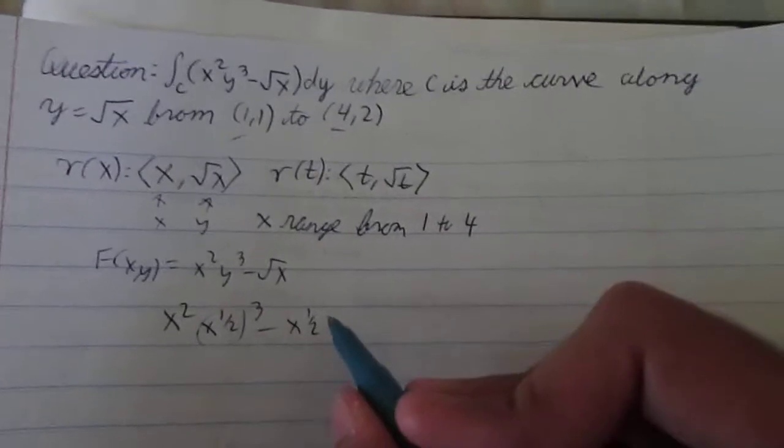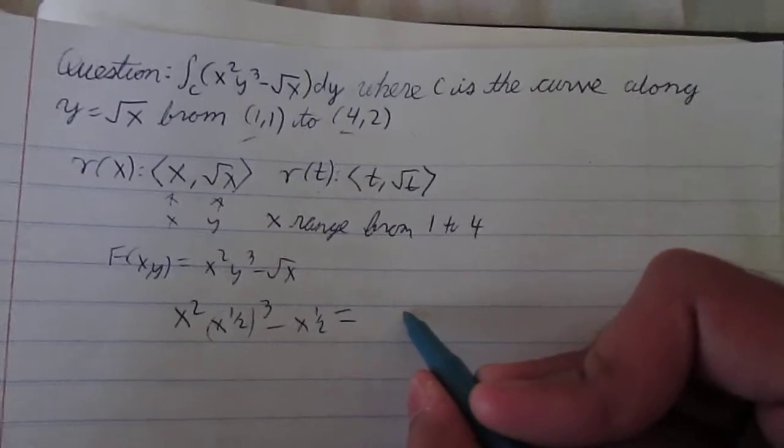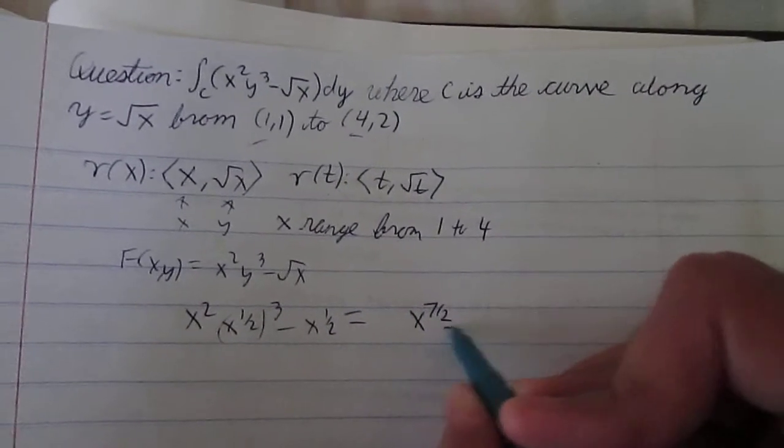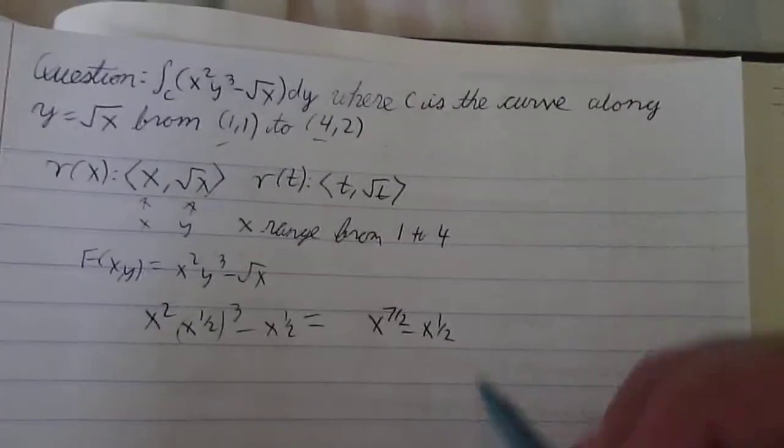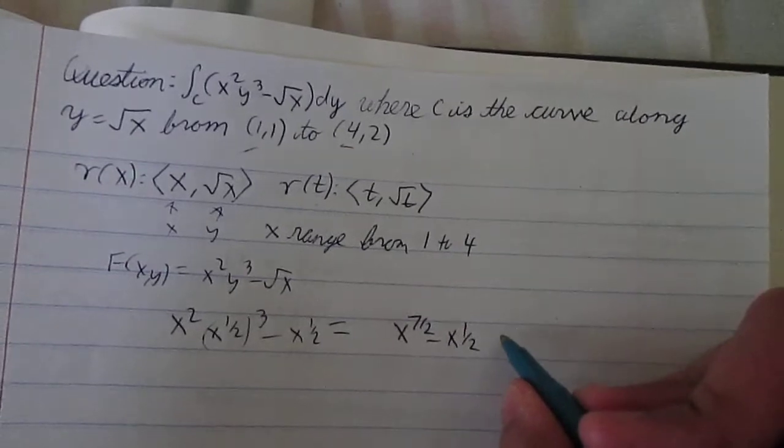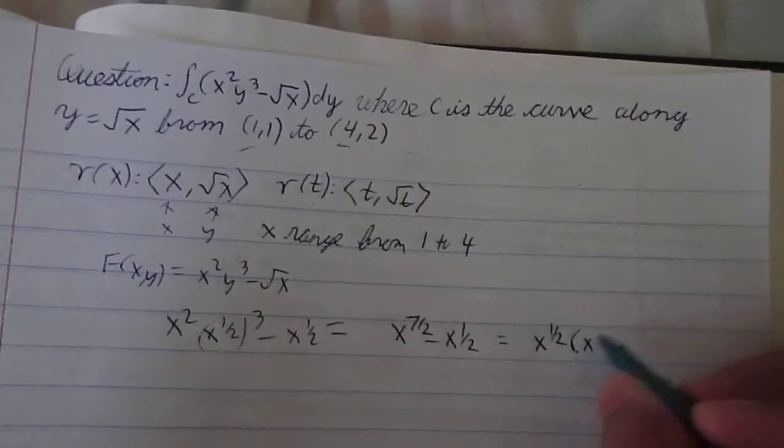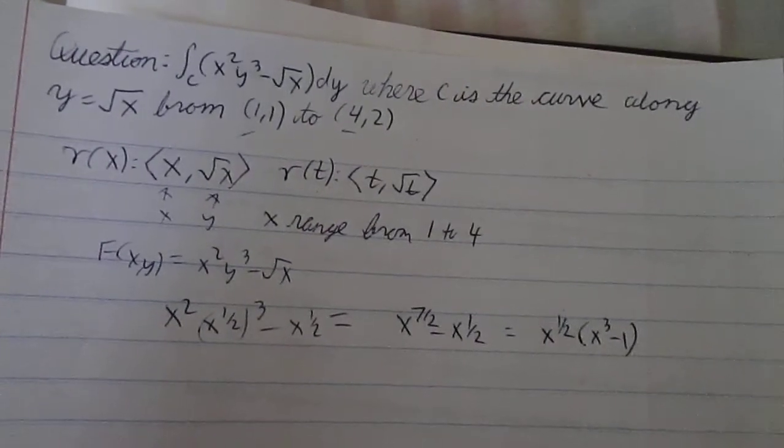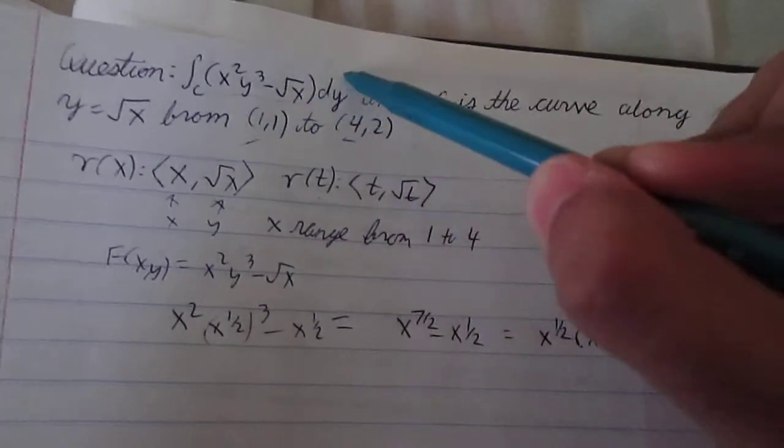So, this is also equal to x to the 7 halves minus x to the 1 half. We can factor out an x to the 1 half, and we can get x to the 1 half times x cubed minus 1. You can check that this works. Now, we took care of this part. We have to take care of dy.